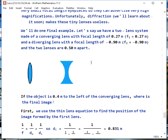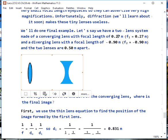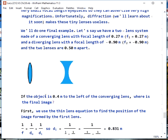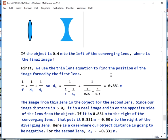As a final example, let's say we have a two-lens system made of a converging lens with a focal length of 0.27 meters and a diverging lens with a focal length of negative 0.9 meters, and we put the two lenses 0.5 meters apart. If the object is 0.4 meters to the left of the converging lens, where's the final image? First, we use the thin lens equation to find the position of the image that the first lens forms. This is just like we've been doing. We do the math and we get 0.831 meters.